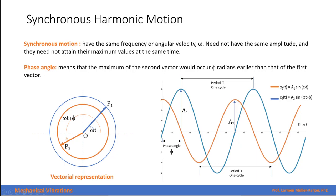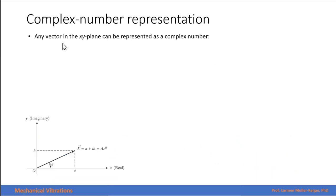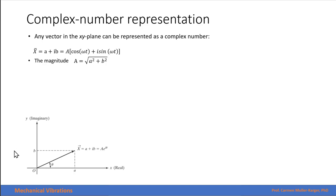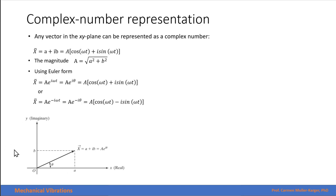If we graph that, these two curves will be synchronous because they have the same period. They can have different amplitudes and a phase angle between each other. Any vector in the x-y plane can be expressed in terms of a complex number. The real part is a and the imaginary part is b, so we can express our vector as a plus ib. The magnitude is the square root of a squared plus b squared, and using Euler form, we can expand this expression in terms of cosine and sine.